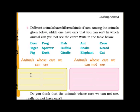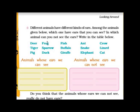Those animals are deer, tiger, buffalo, giraffe, elephant, cat, and dog. From this list you have to find out which animals have visible ears. Deer — yes, it will go here. Frog — frog's ears are not seen, so you will write it here. Fish — fish ears you cannot see.